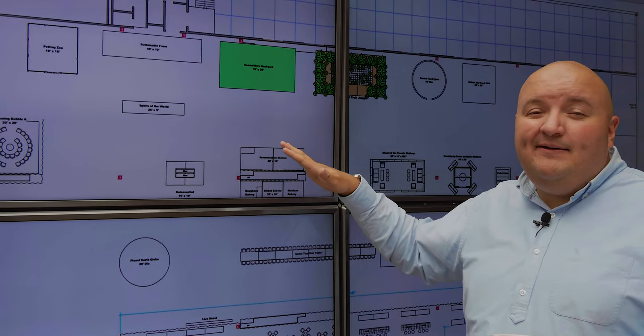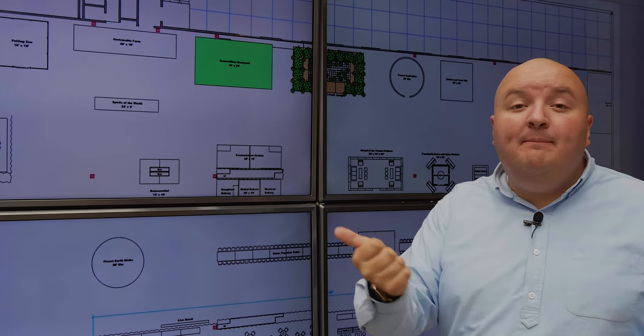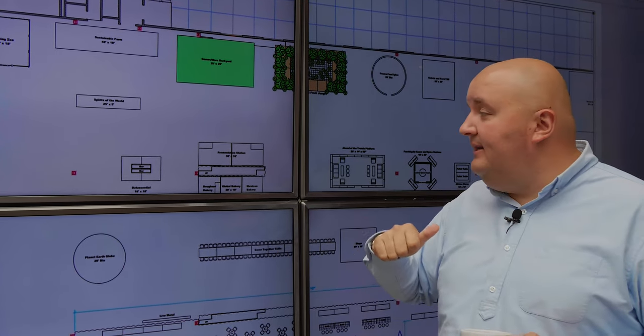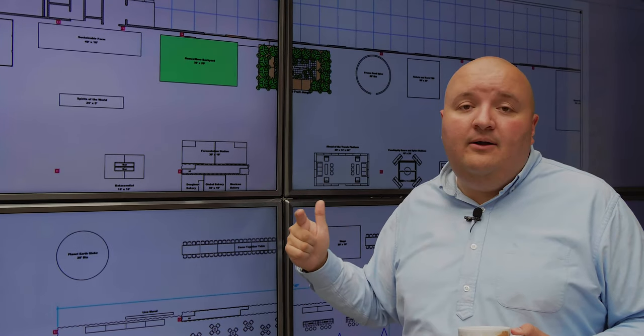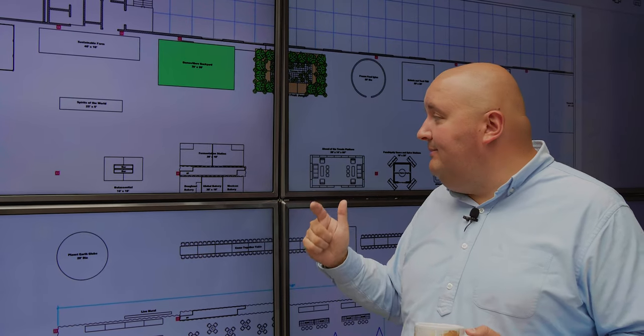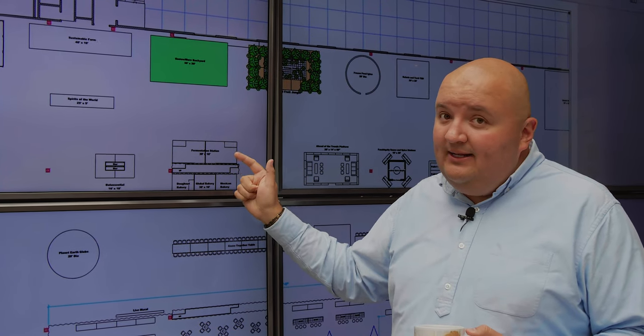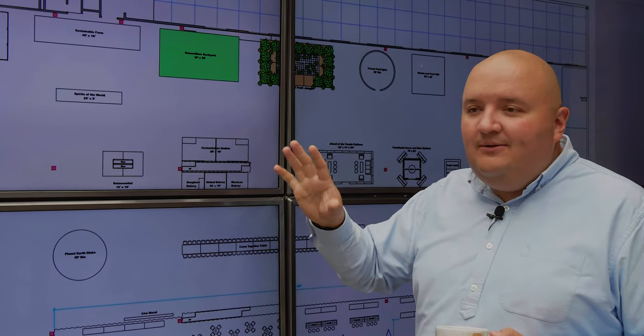Fermentation station. Anything fermented is in this area. So we have kombucha. Mix your own kombucha right there. We have a kraut guy. His name is literally the kraut guy here in Chicago. He's going to teach you how to make kraut and kimchi. And then we have some really, really crazy stuff that I'll let you see when you get there.